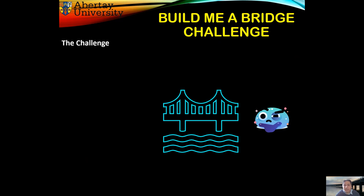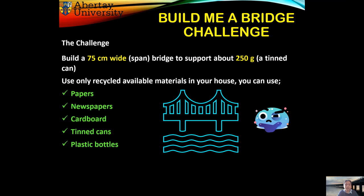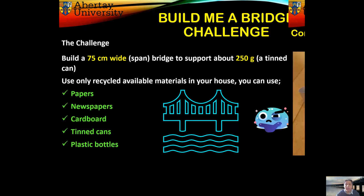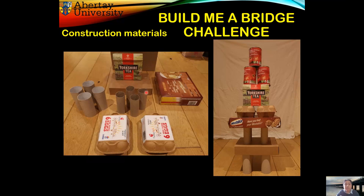So what is our challenge? I'm asking you to build a bridge with a span of 75 centimetres long. The bridge needs to support about 250 grams — roughly the weight of a tin can — and you need to use only recyclable materials. Some examples of materials you can use are paper, newspaper, cardboard, tin cans, and plastic bottles.